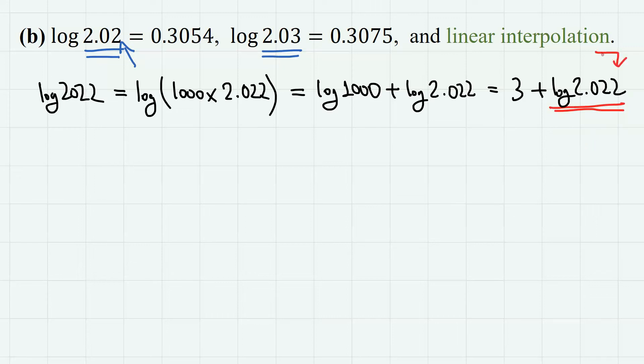In many logarithm tables, logarithm values up to three decimal points are usually not given—usually it's up to two decimal points. So in order to find this, we need linear interpolation.